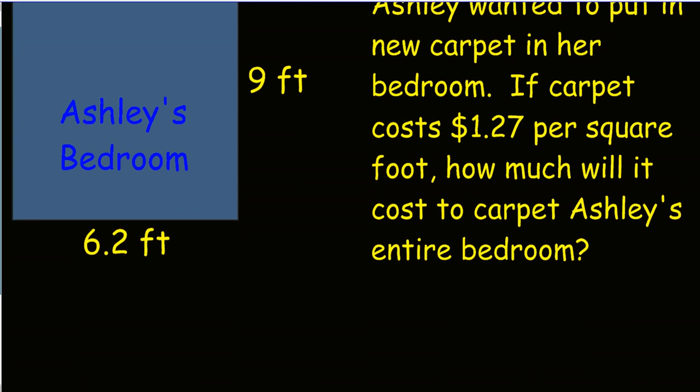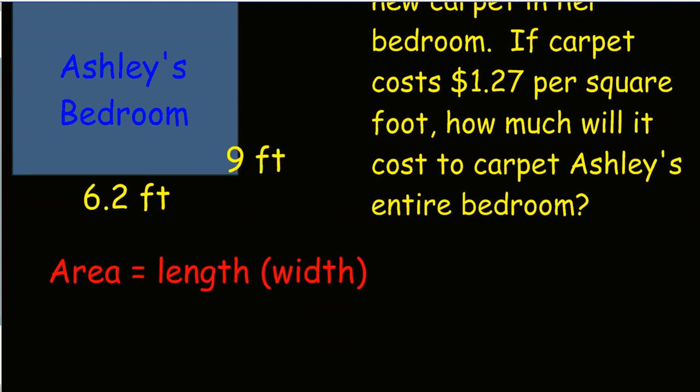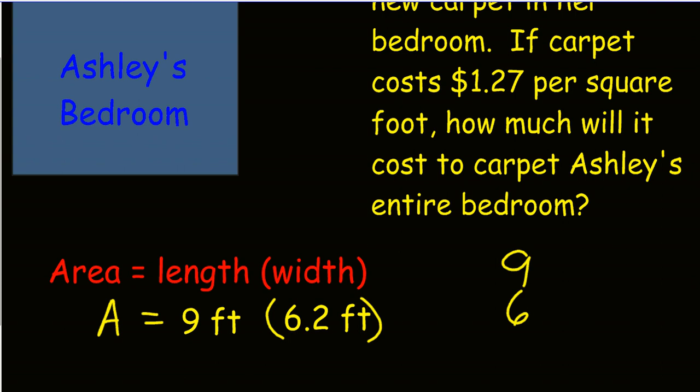Let's look at this problem. Here is an example of a story problem that maybe you can relate to in real life. Ashley wanted to put new carpet in her bedroom. If the carpet costs $1.27 per square foot, how much will it cost to carpet Ashley's entire bedroom? First, we have to know how to find the total area of Ashley's bedroom. Area is equal to length times width. The length is 9 feet. And the width is 6 and 2 tenths feet. When I'm multiplying, that's what these parentheses suggest to multiply. When I'm multiplying these numbers to find the area, I would write them up and down.